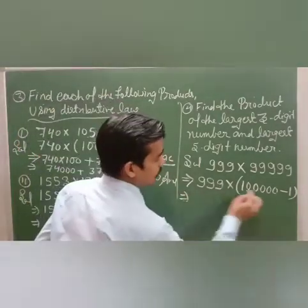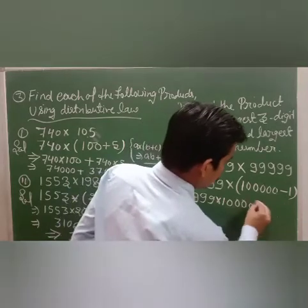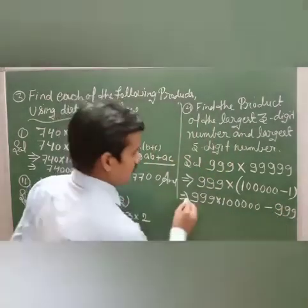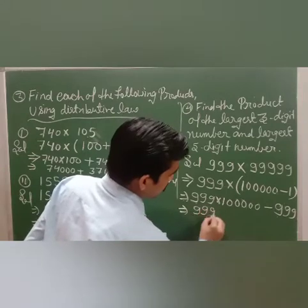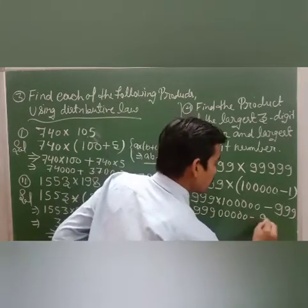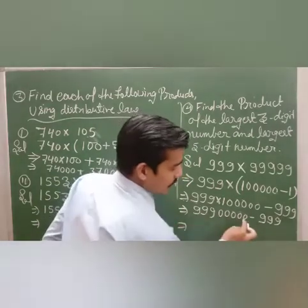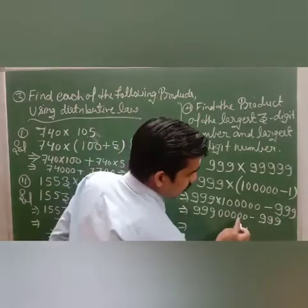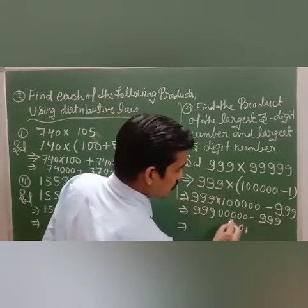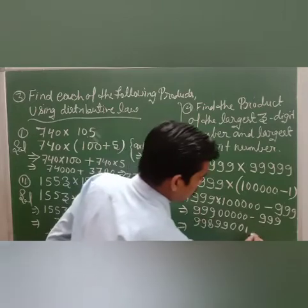Multiplying 99,999 into (1000 minus 1): first multiply 99,999 by 1000, then subtract 99,999 by 1. Working through the subtraction with carry: 10 minus 9 is 1, 9 minus 9 is 0, and continuing gives digits 9, 9, 9, 9, 8. This is your answer: 99,899,001.